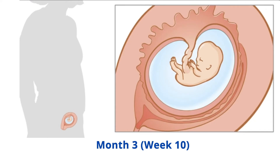Week 10: by the end of week 10, the embryo looks distinctly human, but its head is still very large compared with the body. The neck is visible and the eyelids are formed. The outer ears almost look like real ears, though they are set quite low on the sides of the head.